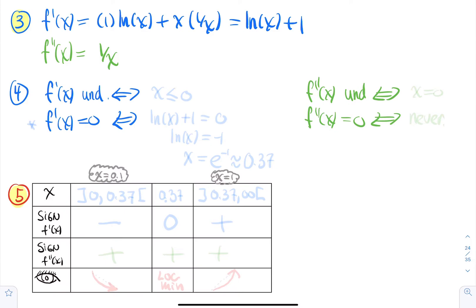When is f' undefined? We have ln(x) + 1, which is undefined when x ≤ 0 — but that's the same restriction as the original function's domain. When is f' equal to zero? You solve ln(x) + 1 = 0, so ln(x) = −1, giving x = e^(−1) ≈ 0.37.